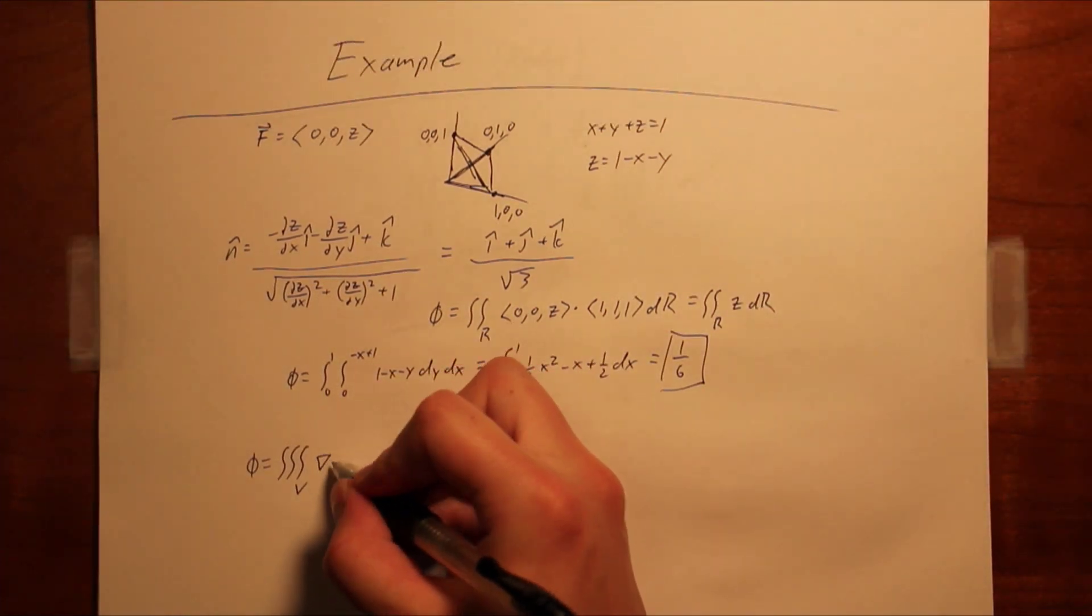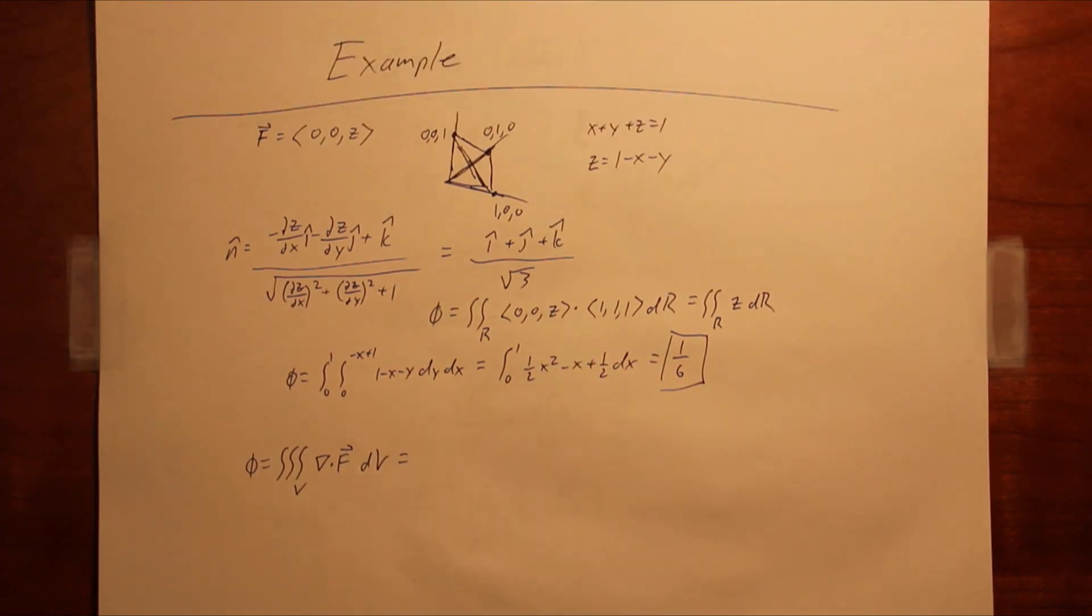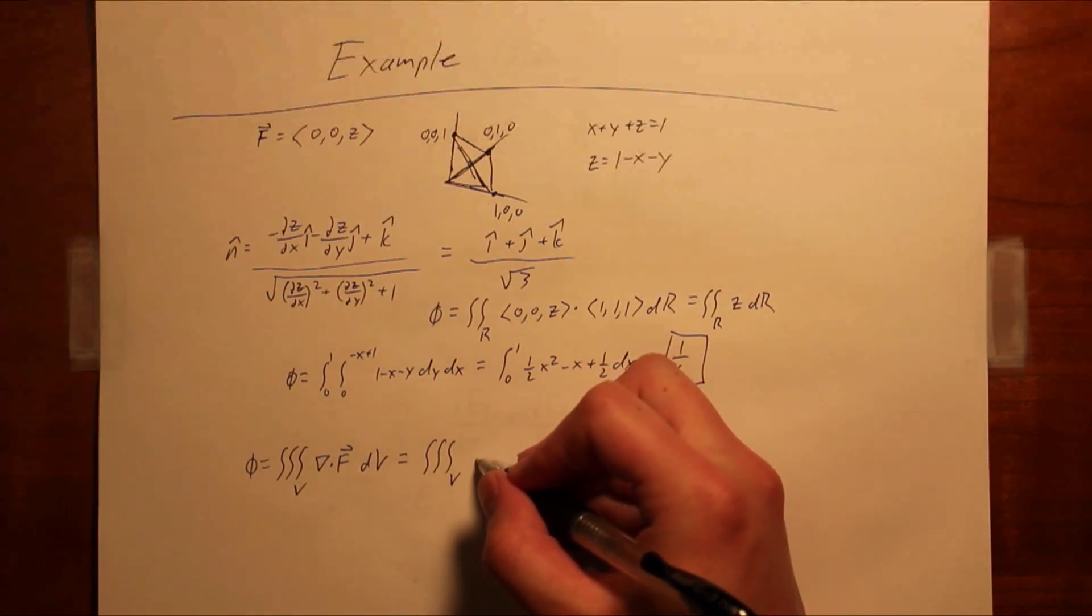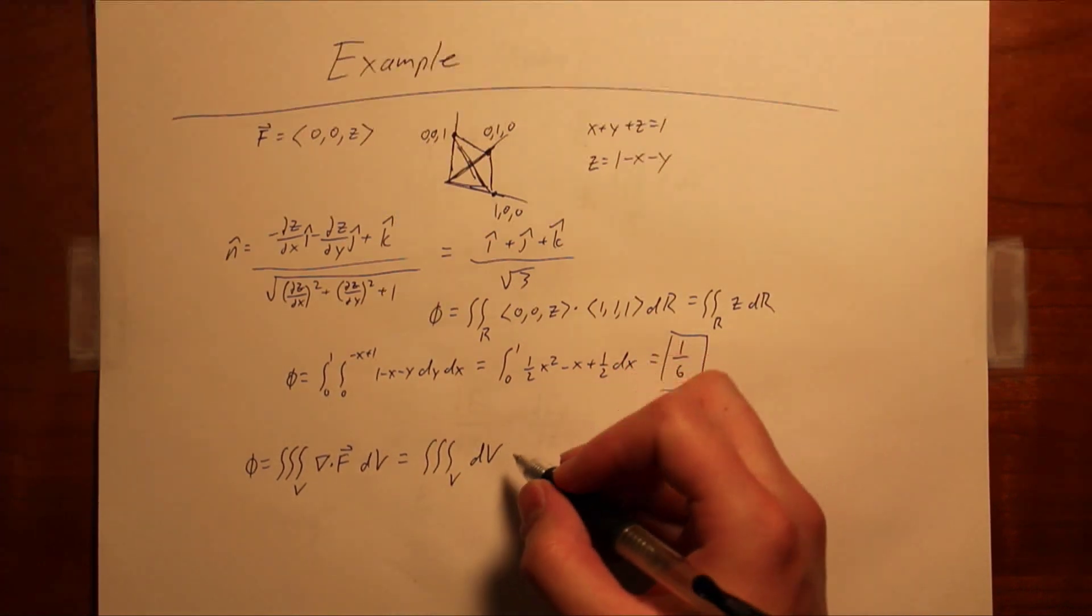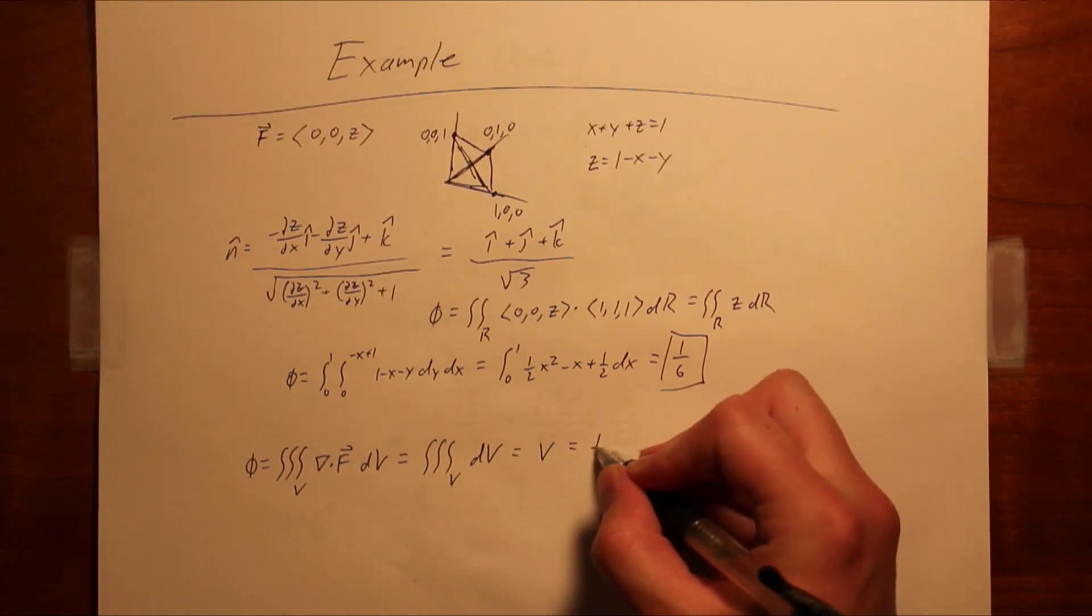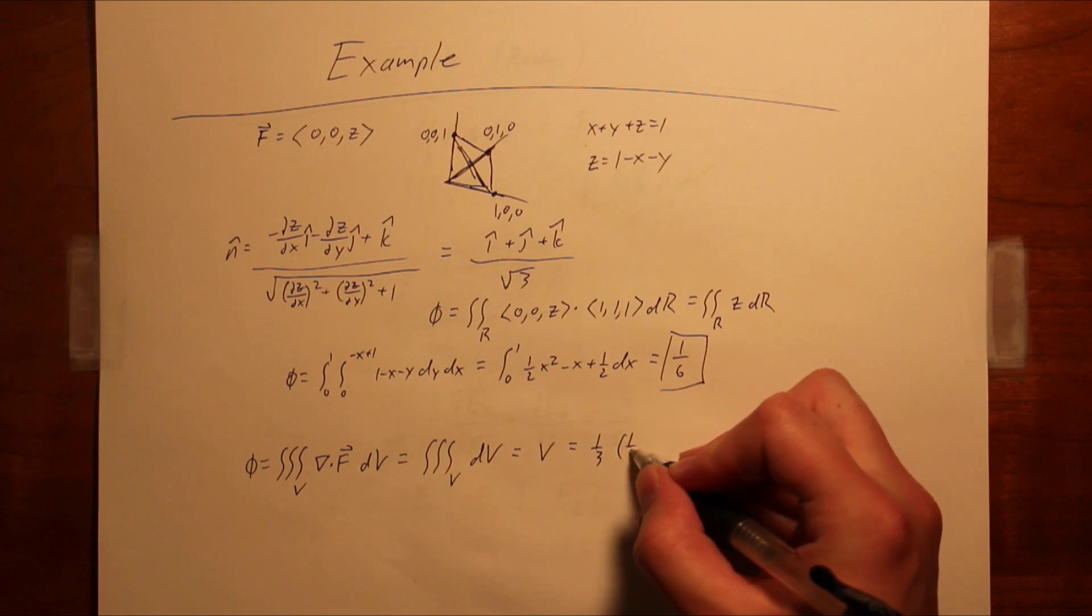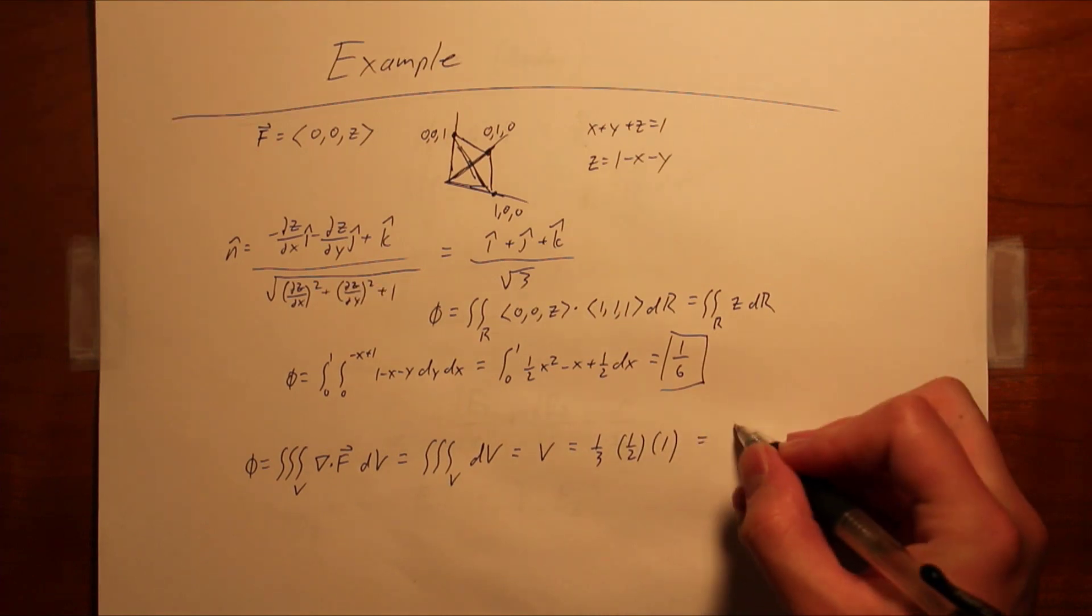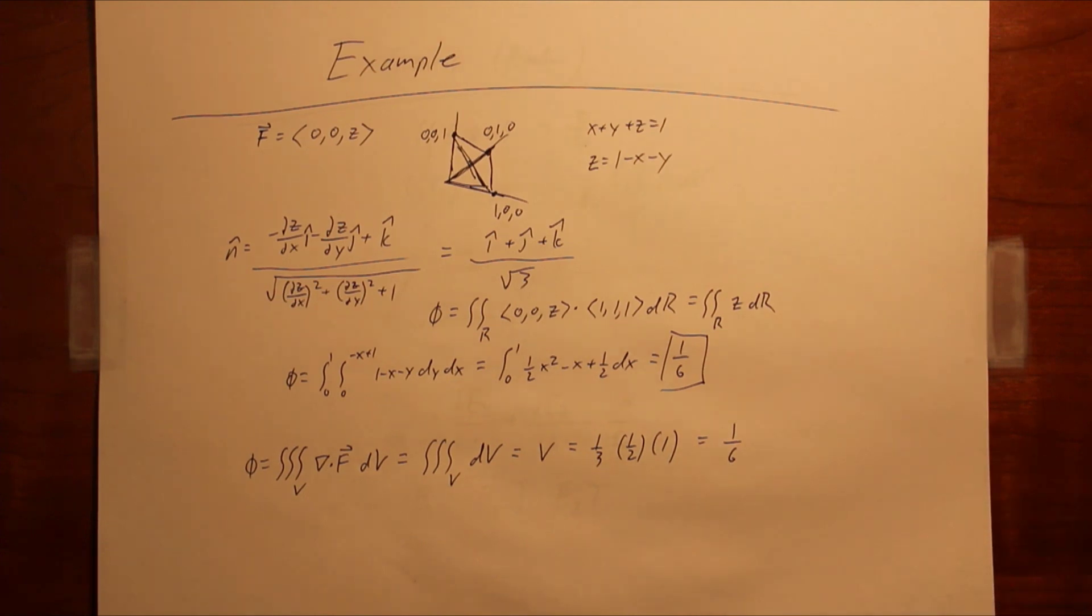Alternatively, we could apply the divergence theorem. Taking the divergence of our field function f, we find that it is simply 1. We could expend some effort and evaluate the triple integral, but there is a shortcut available to us. Integrating 1 over the volume simply gives us the volume, which for a pyramid is 1 third base times height. The base is 1 half and the height is 1, giving a final result of 1 sixth, which was to be expected.